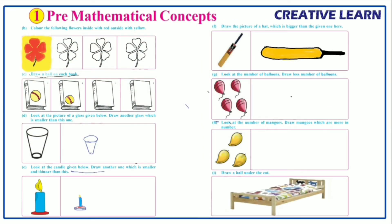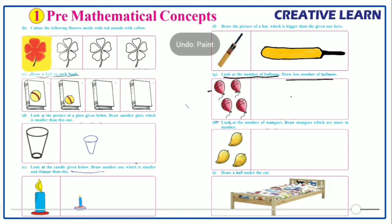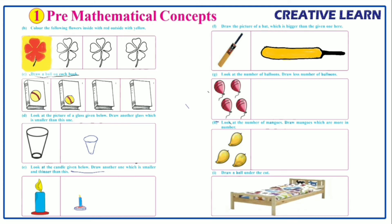Next: look at the number of balloons and draw a fewer number of balloons. Here four balloons are given. We have to draw fewer balloons than the given ones — either three, two, or one. Let's draw.